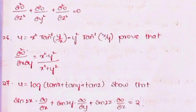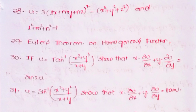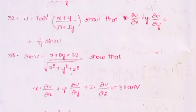Twenty-seventh, u = log(tan x + tan y + tan z); show that sin2x·∂u/∂x + sin2y·∂u/∂y + sin2z·∂u/∂z = 2. Twenty-eighth, u = 3(lx + my + nz)² − (x² + y² + z²), where l² + m² + n² = 1. Twenty-ninth, Euler's theorem on homogeneous functions. Thirtieth, if u = tan⁻¹[(x³ + y³)/(x + y)], show that x·∂u/∂x + y·∂u/∂y = sin2u. Thirty-first, u = sin⁻¹[(x² + y²)/(x + y)]; show that x·∂u/∂x + y·∂u/∂y = tan u. Thirty-second, u = tan⁻¹[(x + y)/(√x + √y)]; show that x·∂u/∂x + y·∂u/∂y = (1/4)sin2u.